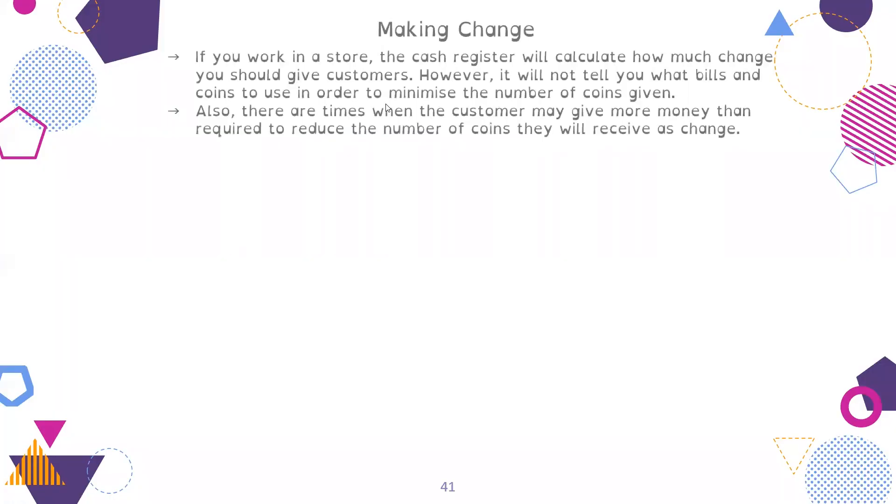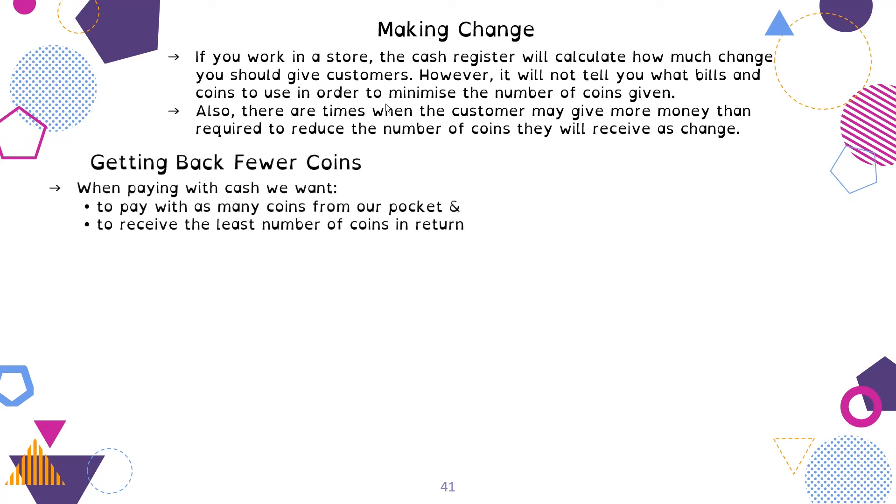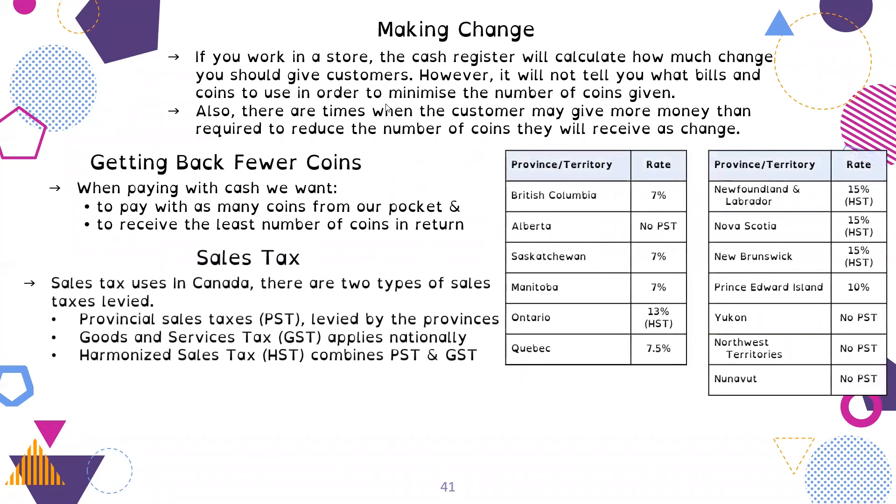Lesson five, making purchases. This is a really packed lesson which we did over a day and a half. Making change: if you work at a store, the cash register will calculate how much change you should give customers. However, it will not tell you what bills and coins to use to minimize the number of coins given. Also, there are times when the customer may give you more than required to reduce the number of coins they will receive as change. Generally we want fewer coins and bills. When we pay, we want to pay with as many coins from our pocket to get rid of as many as we're carrying around. When we receive, we want to get back the least number of coins in return.